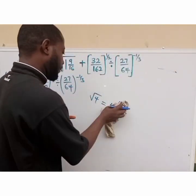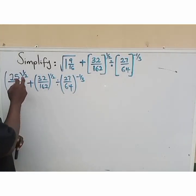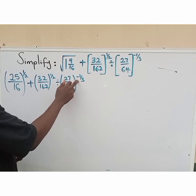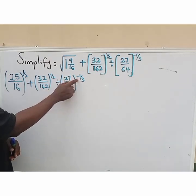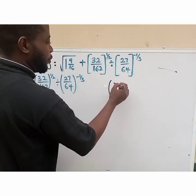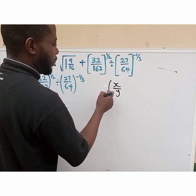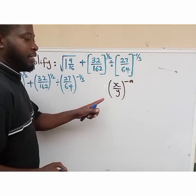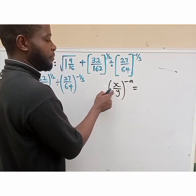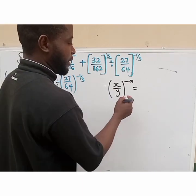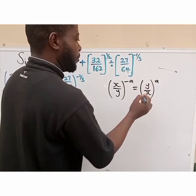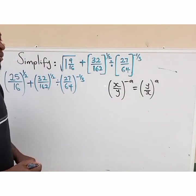The next thing to do is to check the powers. You notice that this power is positive, this is positive, but this one is negative. So in that case, let's change this back to positive. In indices, when we have (x all over y) raised to the power of negative e, to change the power to positive, the fraction in the brackets turns to its reciprocal — so this changes to y all over x — and the power becomes positive.